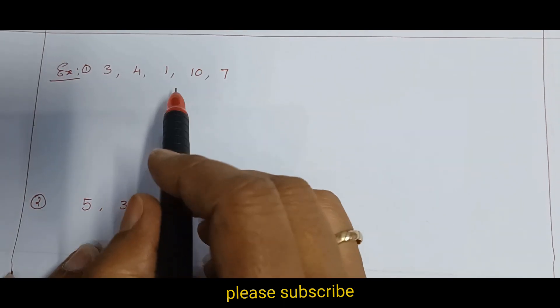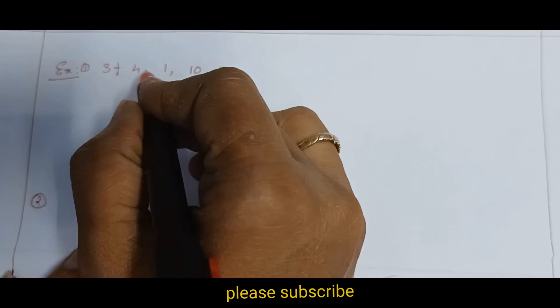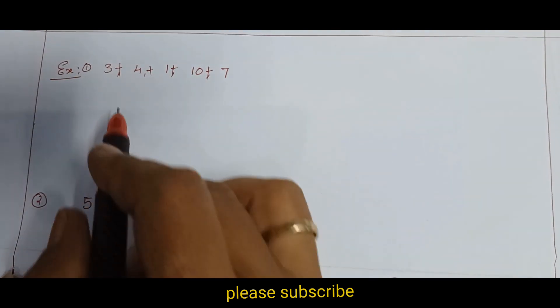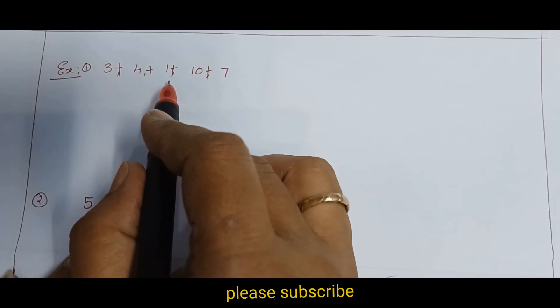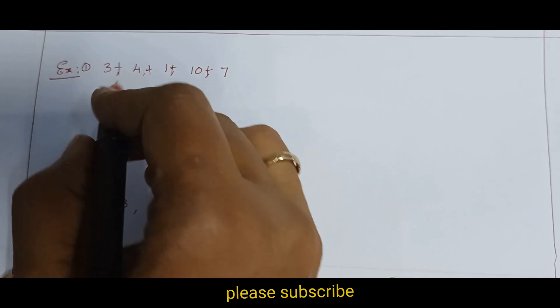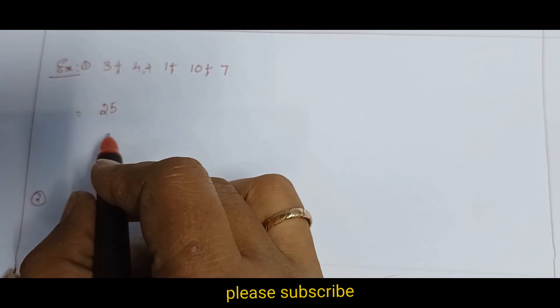So, there are 5 numbers. Then, let us see how to do. So, just we should add all these numbers, whatever given there. 3 plus 4, 7. Plus 1, 8. 8 plus 10, 18. 18 plus 7, 25. So that is 25. Sum of the numbers, 25 we got.